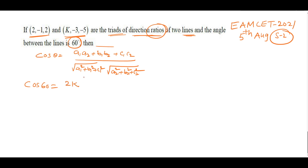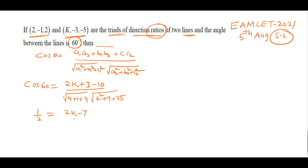cos 60° = (2k + (−1)(−3) + (2)(−5)) / (√(4+1+4) × √(k²+9+25)). This gives 1/2 = (2k + 3 − 10) / (3 × √(k²+34)) = (2k − 7) / (3√(k²+34)). Cross-multiplying: 3√(k²+34) = 2(2k−7) = 4k − 14.